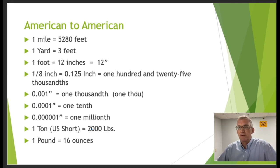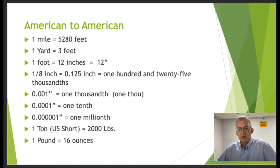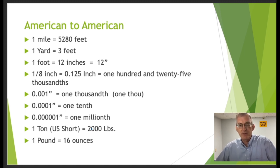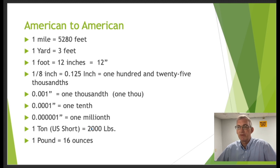Let's look at American to American conversions — you'll find these in a table. One mile equals 5,280 feet; one yard equals three feet; one foot equals 12 inches; and one eighth of an inch equals 0.125 inches, also referred to as one hundred and twenty-five thousandths. Note that 0.001 is one thousandth of an inch, sometimes called one thou, and a tenth is a ten-thousandth of an inch, which is 0.0001.